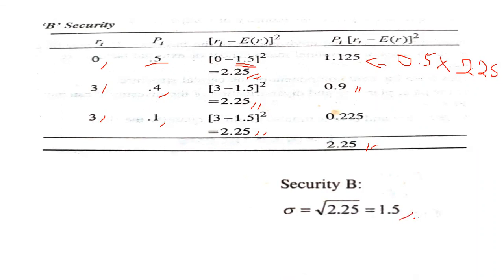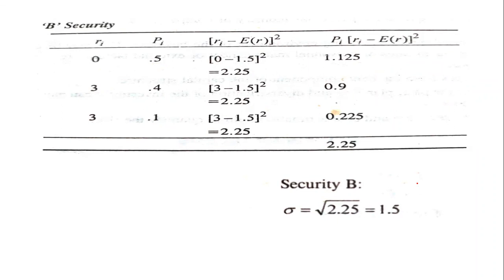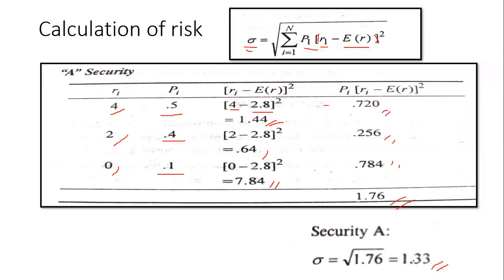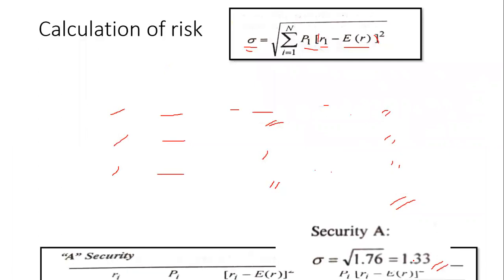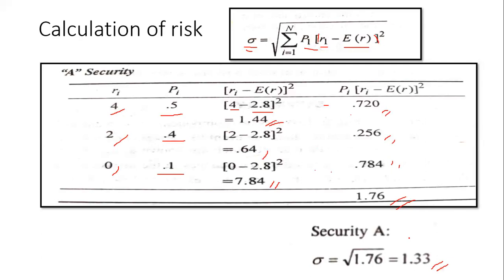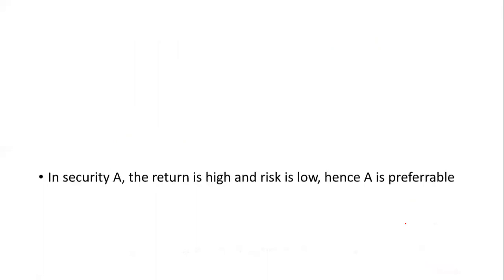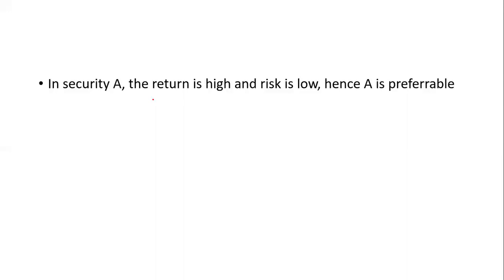Comparing both securities: Security A has a return of 2.8 and risk (standard deviation) of 1.33, while Security B has a return of 1.5 and risk of 1.5. Security A's return is higher and its risk is lower. Therefore, the conclusion is that Security A is preferable — it offers higher return with lower risk, so Security A should be selected.